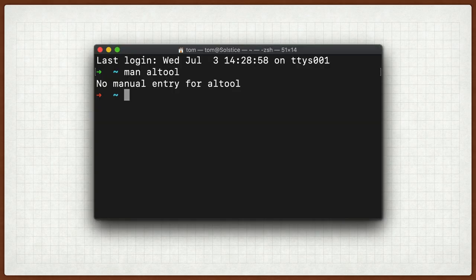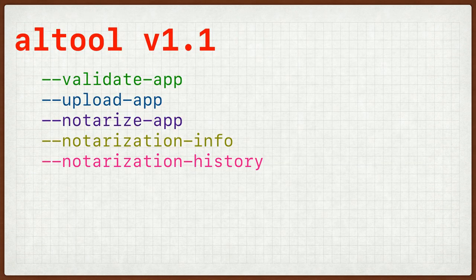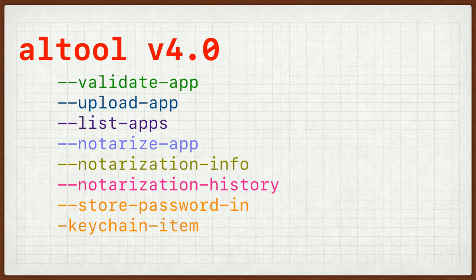When I started writing this talk, there wasn't a manual entry for ALTool. But about a week ago, Apple released version 4.0 of the ALTool binary with beta 3 of Catalina. You now get a manual file, which is great. If you're running beta 2, you will get ALTool version 1.1, which has five flags: validate the app, upload the app, notarize the app, notarization info, and the notarization history for these IDs. But we're only going to talk about version 4.0 today. That adds a couple more. You can also get a list of applications that have been notarized with that developer ID, and you also get the option to store the password in a keychain item.